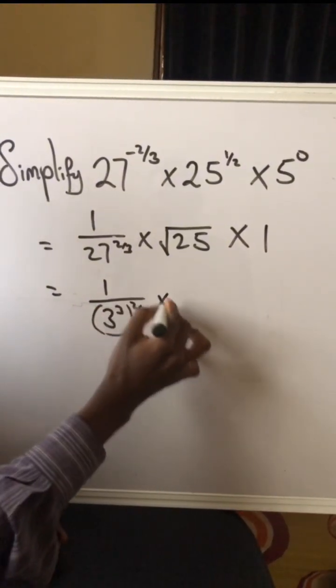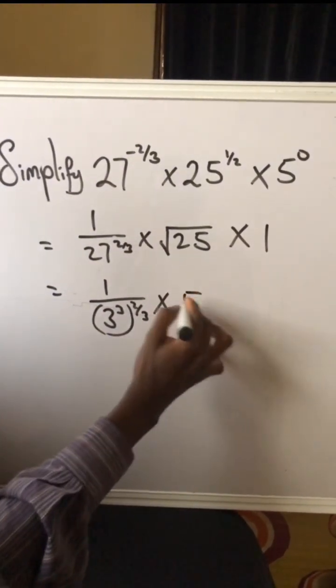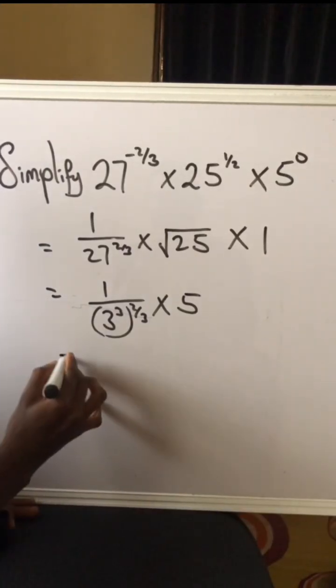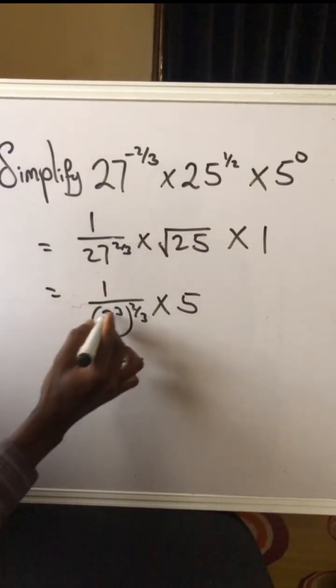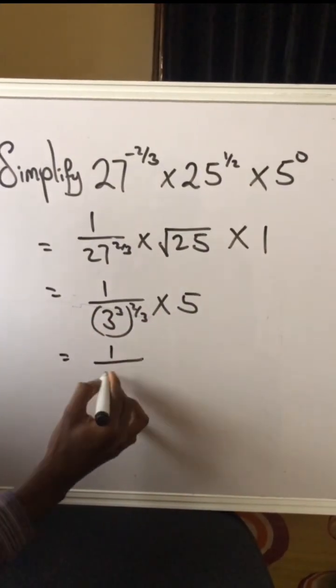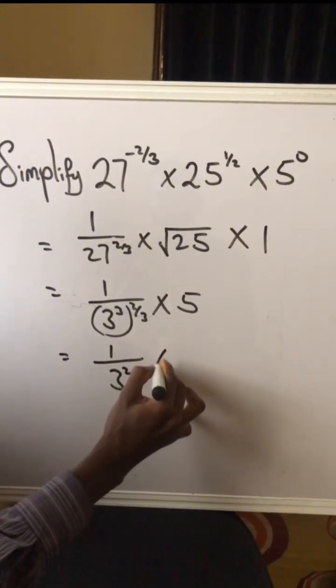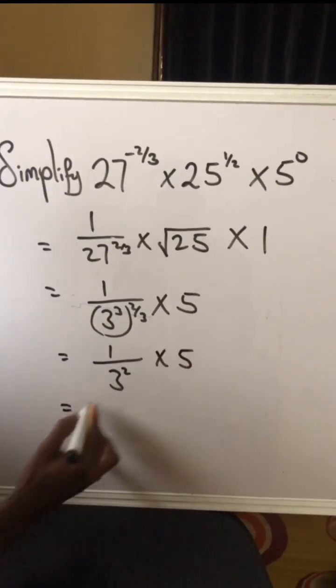So we have 1 over 3^2 times 5. This gives us 3 to the power of 2 in the denominator, times 5 in the numerator.